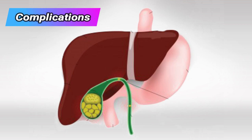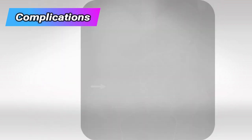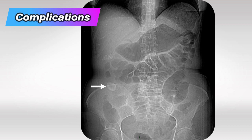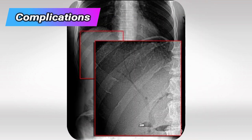If a gallbladder stone persists for a long time, it's going to result in inflammation of the gallbladder. If the inflammation is further ignored, it's going to cause a fistula between the gallbladder lumen and the small intestine lumen, allowing the stone to pass directly into the small intestine. A stone larger than 2.5 cm can block the ileocecal valve — you'll see the stone at the ileocecal valve with proximal dilation and obstruction of the small intestine, and also air in the biliary tree.